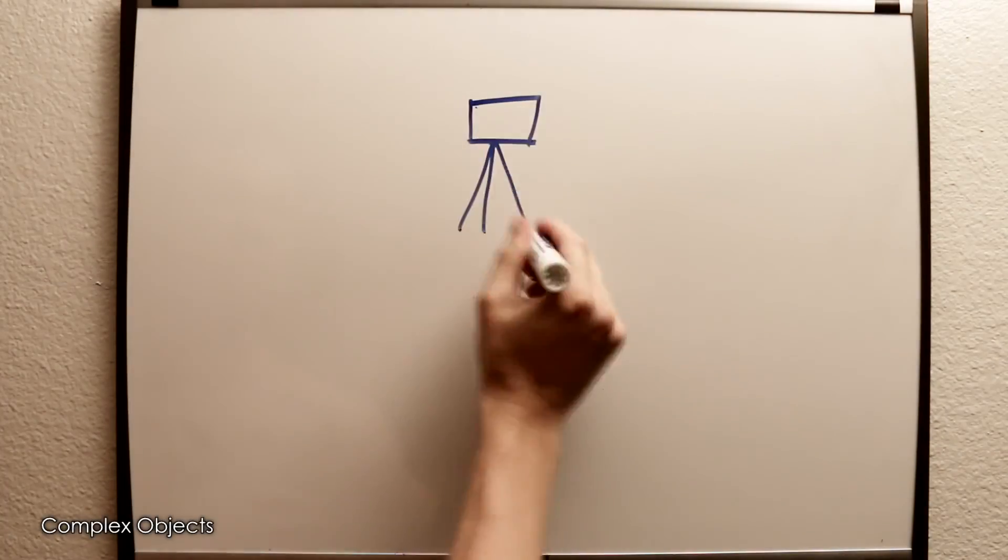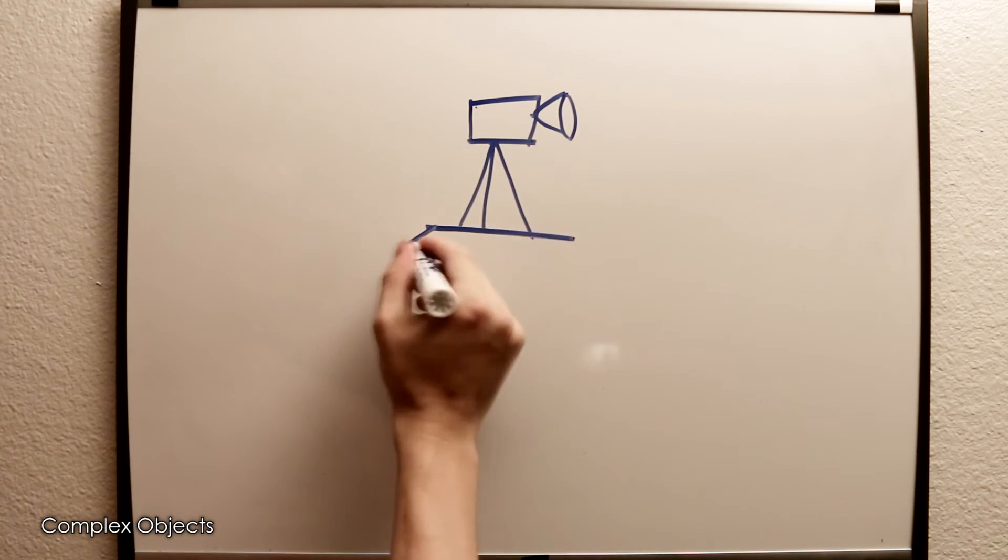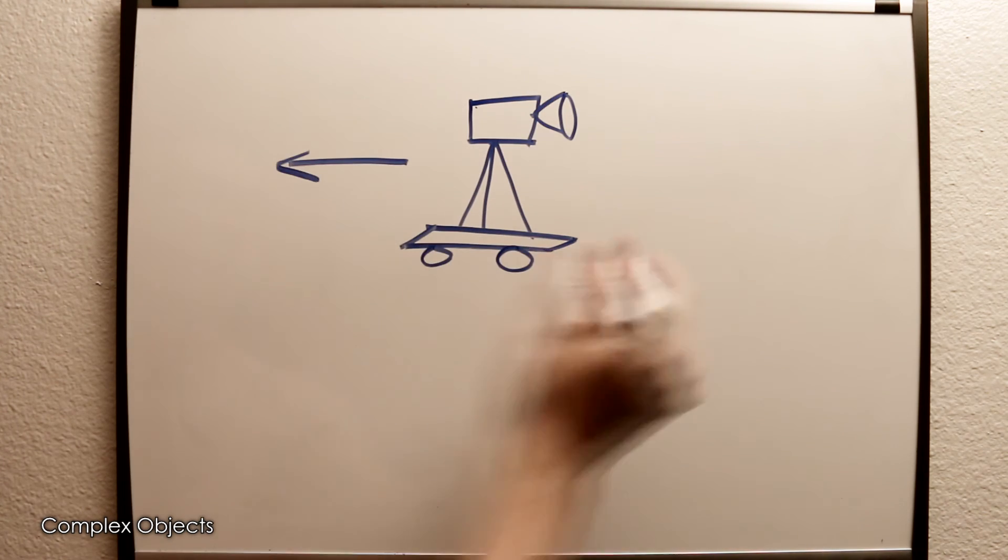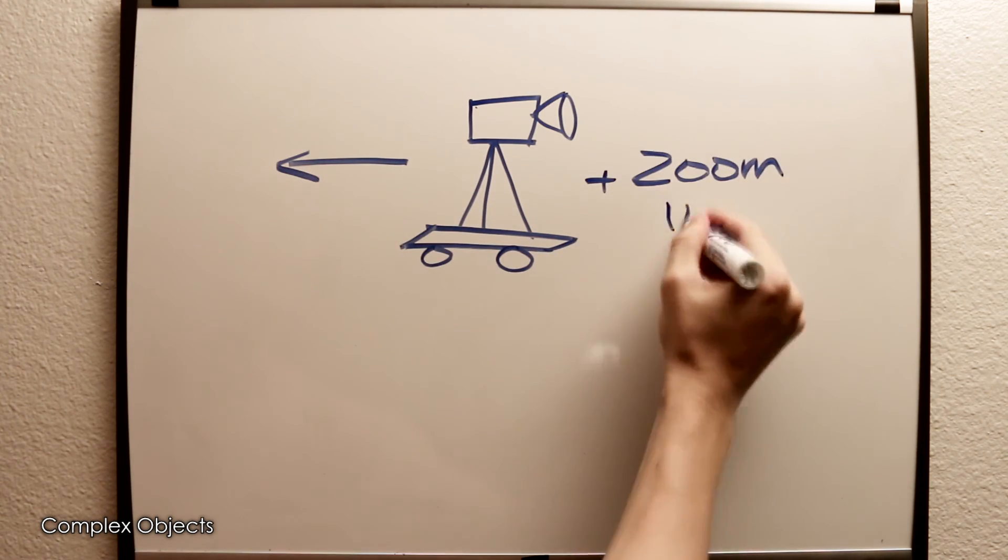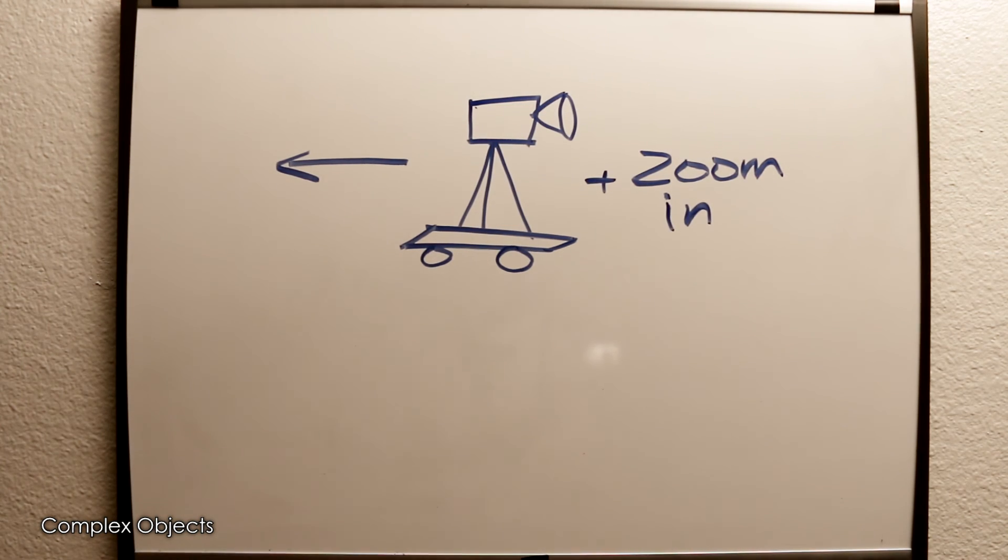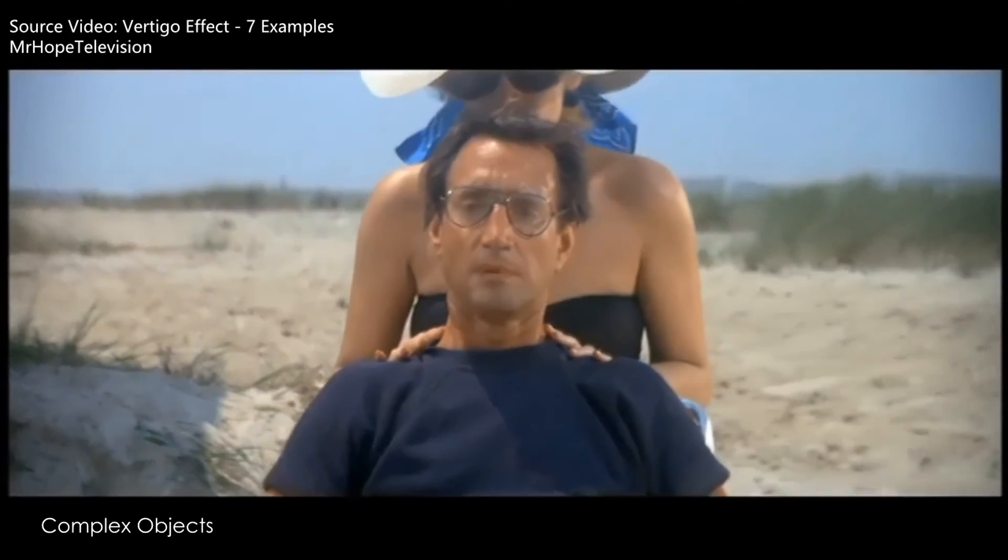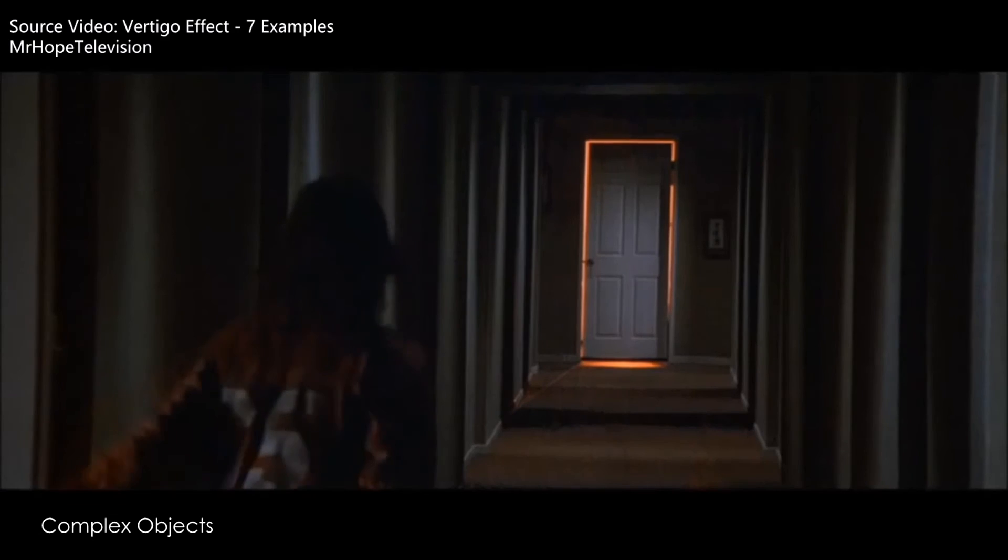I'm simulating something called the dolly zoom effect. When they do this with real cameras, they have the camera mounted on a dolly and as it's pulled backwards, the camera is simultaneously zoomed in to the subject to kind of compensate. So you get this crazy distortion of space.